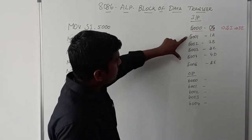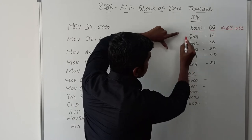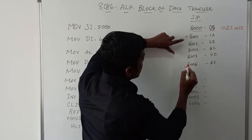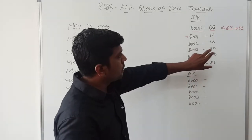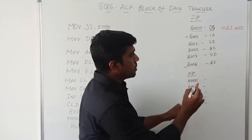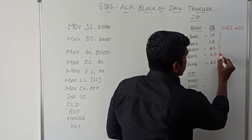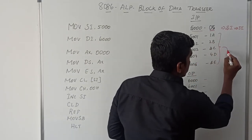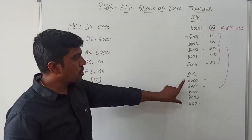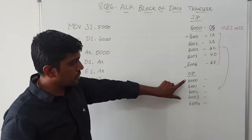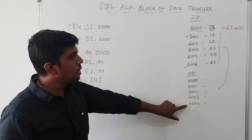Memory locations 5001H to 5005H hold 5 eight-bit data values. After execution of this program, these 5 eight-bit data values are transferred to the destination index. The output memory locations are 6000H to 6004H.